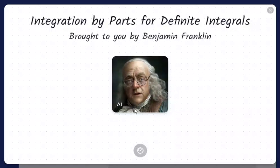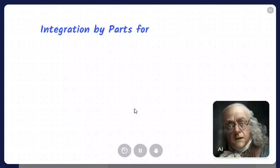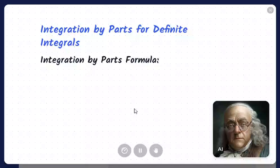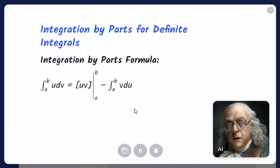So, let's get started. Integration by parts for definite integrals. Let's begin by understanding the key concept. Integration by parts formula: The formula for integration by parts for definite integrals is integral from A to B of U dV equals UV evaluated from A to B minus the integral from A to B of V dU.